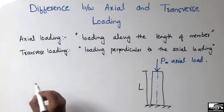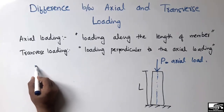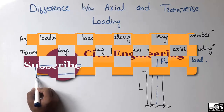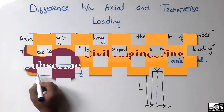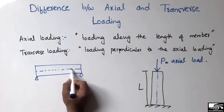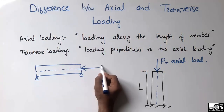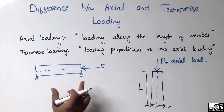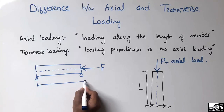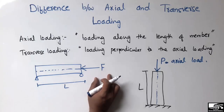Similarly, if I take an example of a beam — let's suppose this is a simply supported beam — this is the axis of the beam. When the load acts along the axis of the beam, or along the length of the beam, this load is known as the axial load.